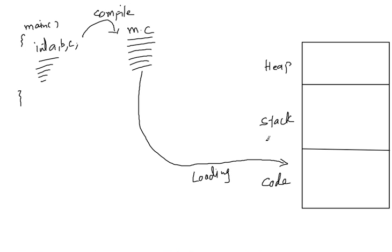Whenever we want to run any program, the machine code has to be brought into main memory — it is first loaded. Just like for playing any DVD you must load it in the player, or to play audio you must insert a CD, the machine code of a program must be loaded in main memory. Then the CPU will start executing the program by taking one instruction at a time. This is how the code section is used.